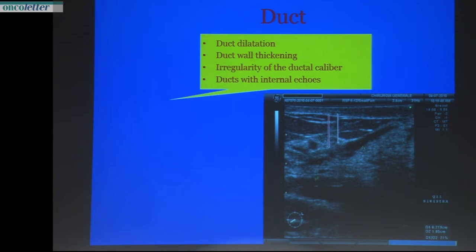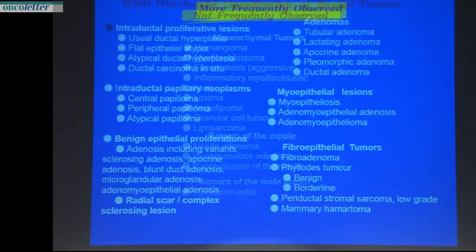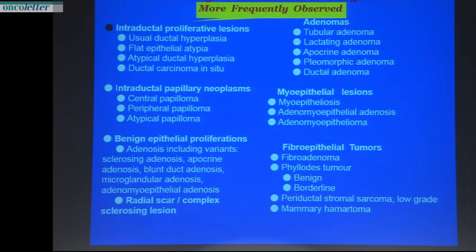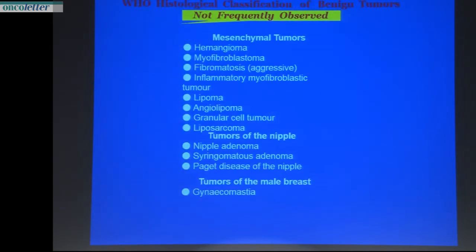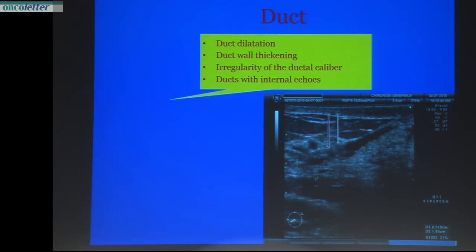Surgery should only be performed for very important benign diseases. Benign lesions have been classified by the World Health Organization into: more frequently observed intraductal proliferative lesions, intraductal papillary neoplasms, benign proliferative adenomas, myoepithelial lesions, fibroepithelial tumors, and less frequent mesenchymal lesions including hemangioma, myofibroblastoma, and fibromatosis.